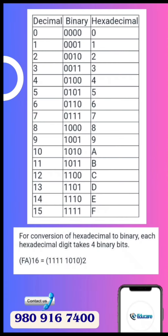For decimal, binary, and hexadecimal conversions, we use 4-digit binary numbers corresponding to each hexadecimal digit. For example: 0000 represents 0, 0001 represents 1, 0010 represents 2, 0011 represents 3. This way we can represent 0 to F.